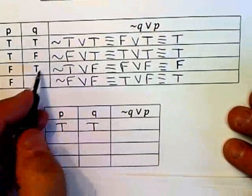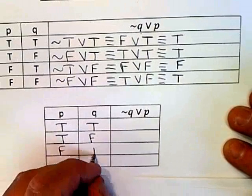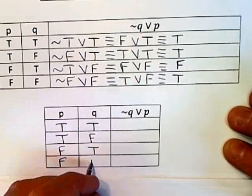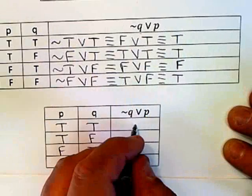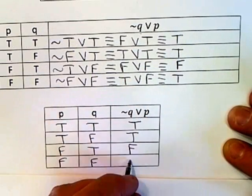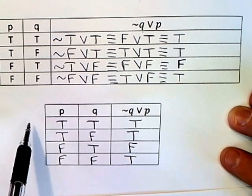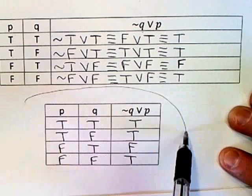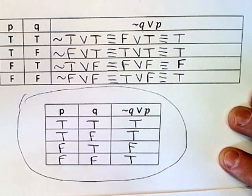False, true, false, false, and then I get rid of all the preliminary work and just put the results from there. So it's T, T, F, T. So the truth table for that statement is there.